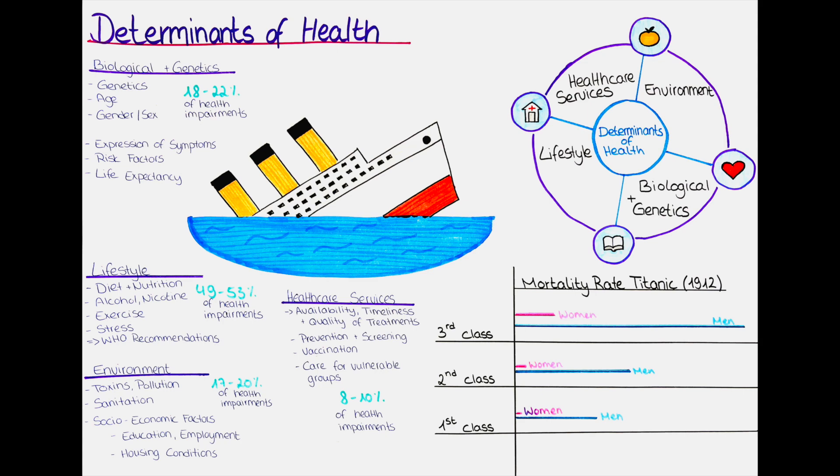Maybe you have heard the saying before that women get sick and men die. Statistically, women live on average six to seven years longer than men, but still women record higher levels of morbidity in both acute and chronic illnesses. Statistics also show that 60% of GP consultations involve women, and over 60% of hospital beds are occupied by women.